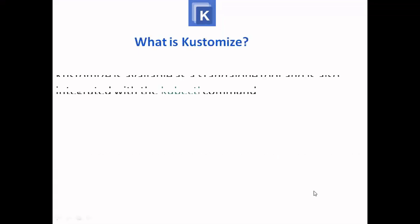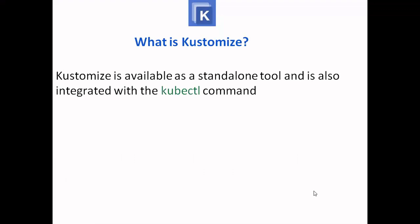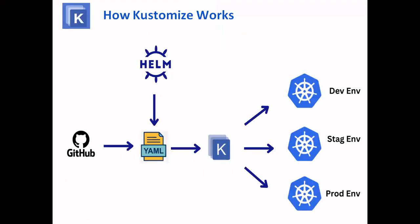Kustomize is available as a standalone tool and is also integrated with the kubectl command. In this diagram, you can see that with the help of a GitHub repository, we are going to create the YAML configuration file — the kustomization.yml — and as you can see, there are different environment requirements as per the development stage and production stage.